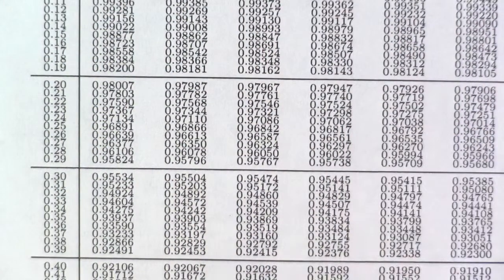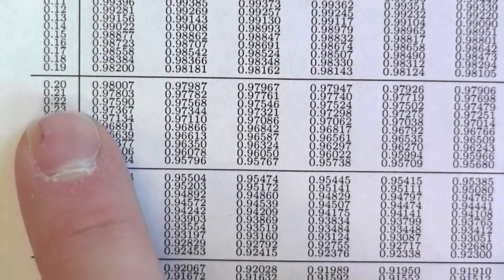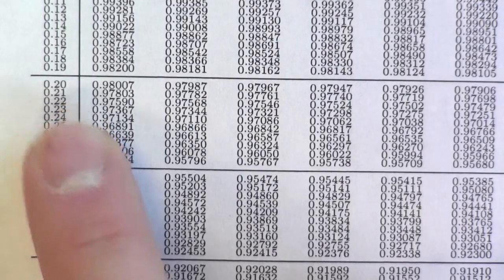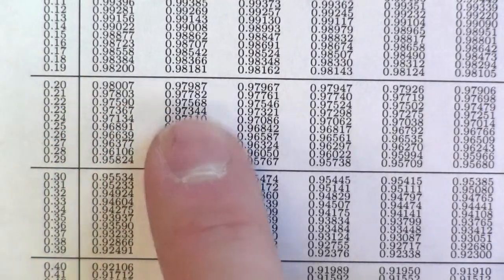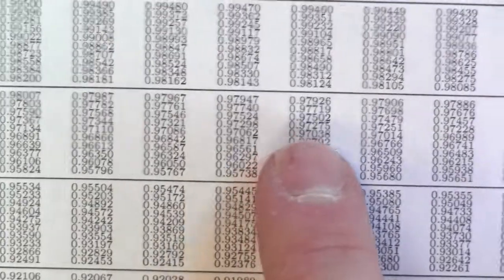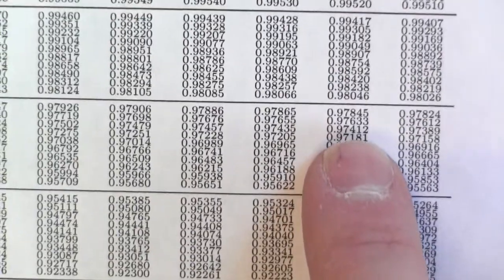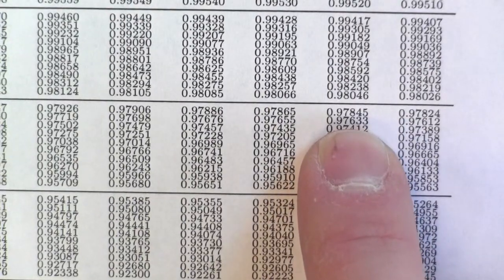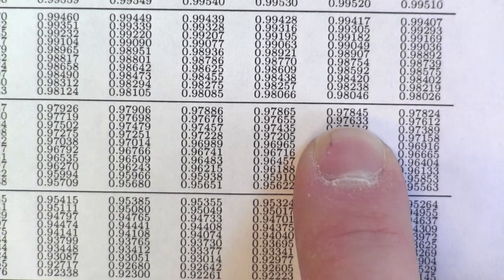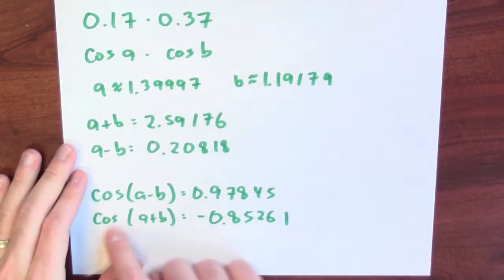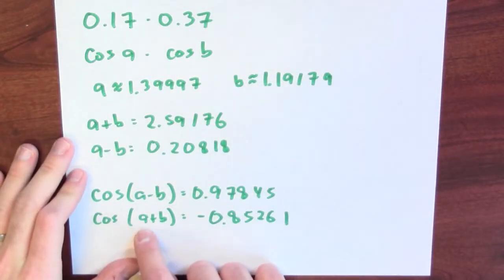Here I've got a table of cosine values and if I look at 0.20, 0th column, 1st, 2nd, 3rd, 4th, 5th, 6th, 7th, 8th column, I find out that cosine of 0.208 is about 0.97845. And I can similarly use my table for cosine to approximate cosine of a plus b. It's negative 0.85261.